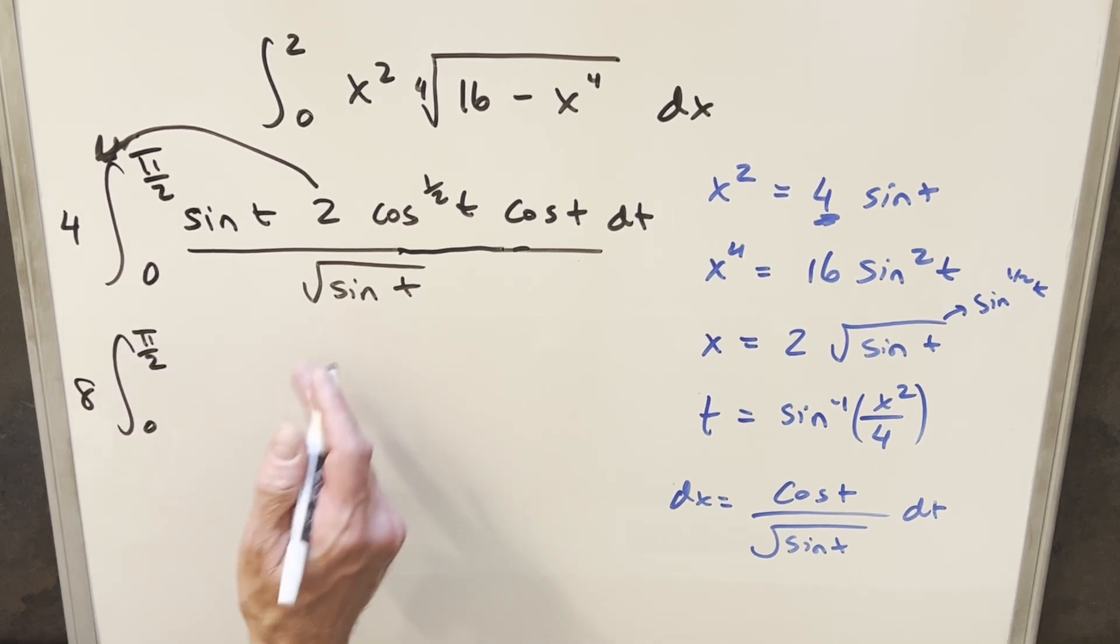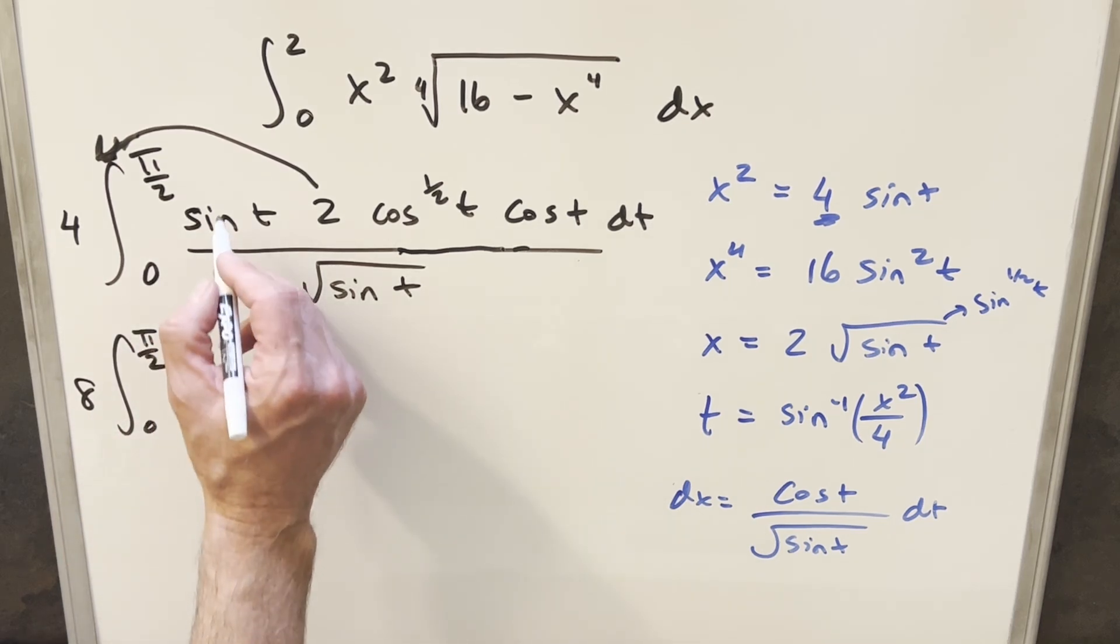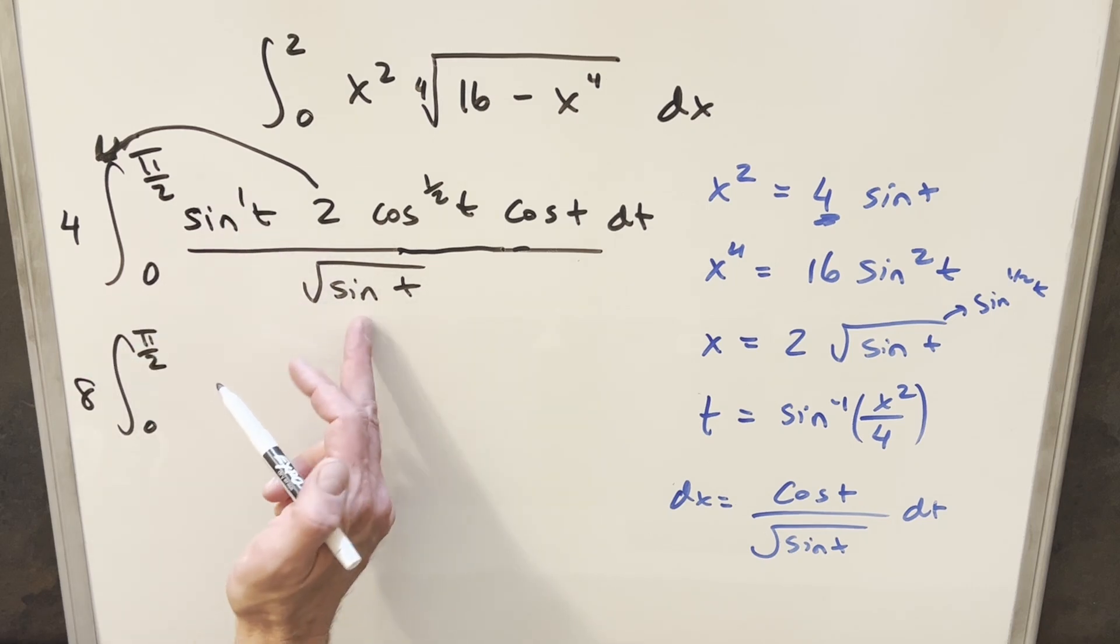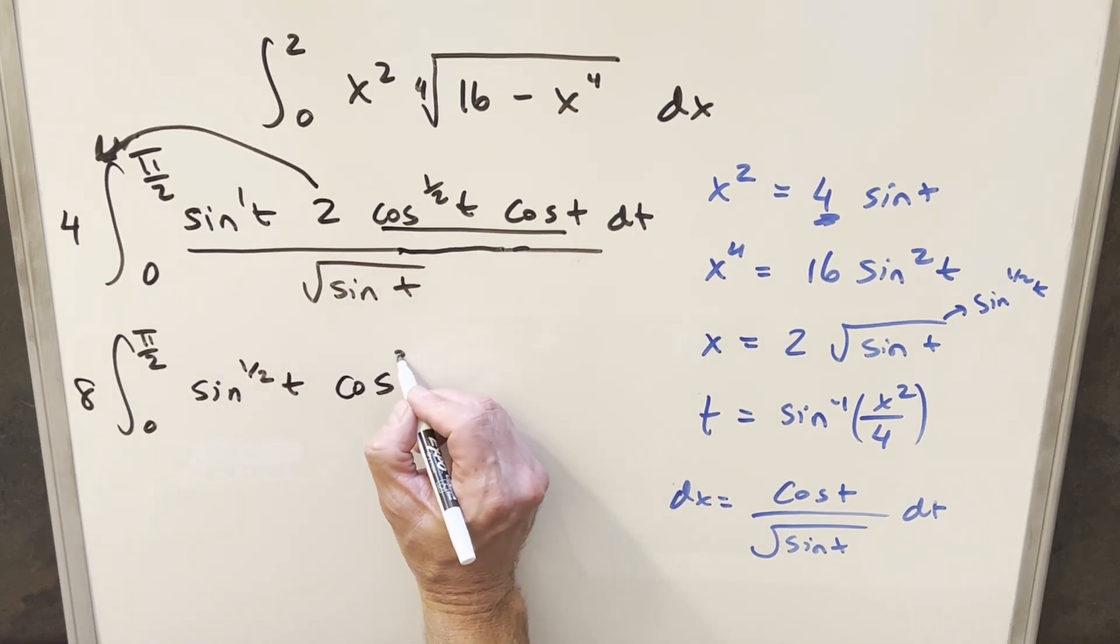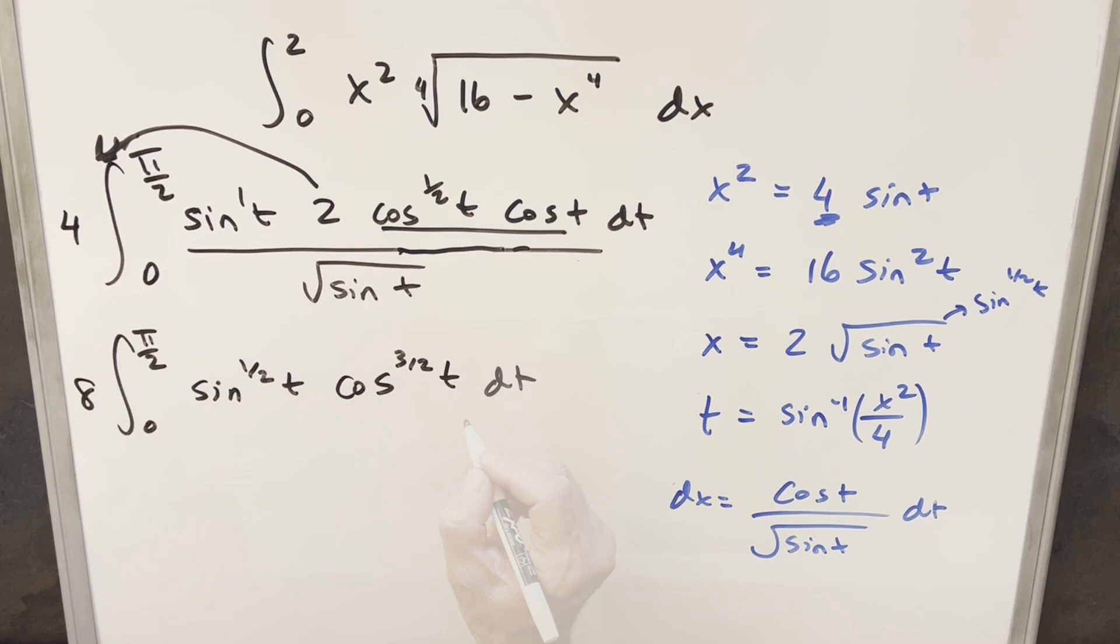And then we can consolidate these sines and cosines. Like first, if we have sine, just sine to the 1 here over 1 half sine, I can write this as sine to the 1 half t here. And then multiplying these cosine terms together, we end up with cosine 3 halves t. And now at this point, we're in really good shape to use the beta function on this integral.